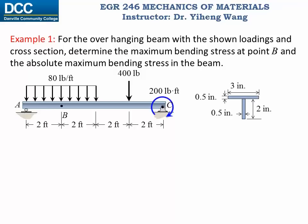Let's look at this first example. For this overhanging beam with the shown loadings and the cross-sectional area also shown, we need to determine the maximum bending stress at point B and also the absolute maximum bending stress in this beam. To determine the maximum bending stress at point B, we need the internal bending moment at point B. Since bending moment is a function of position along the beam, we first need to determine where the absolute maximum bending moment occurs.